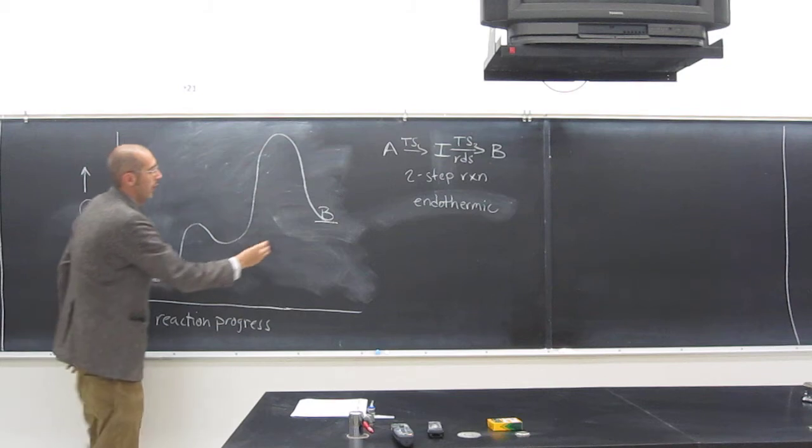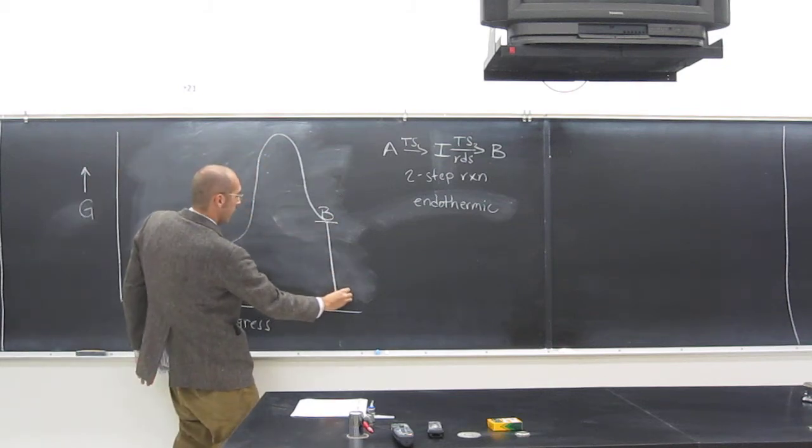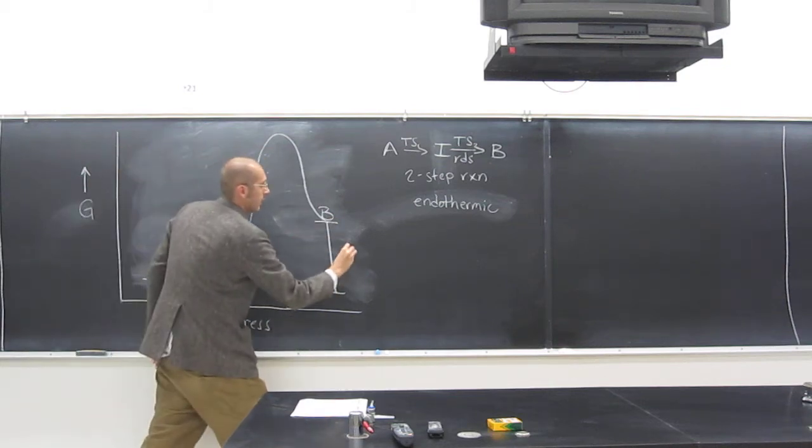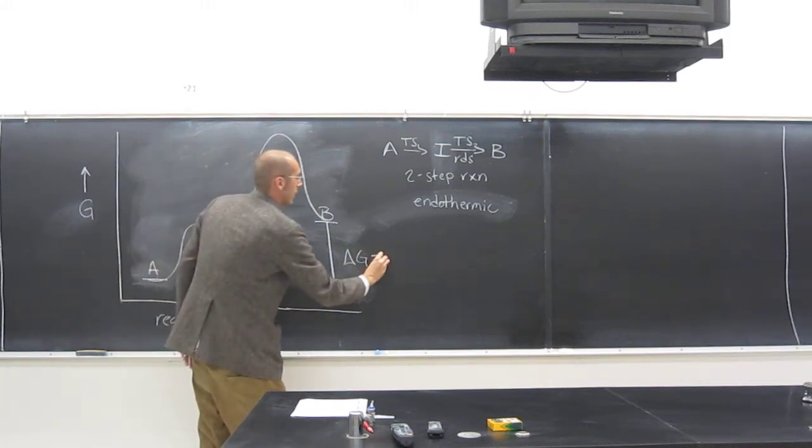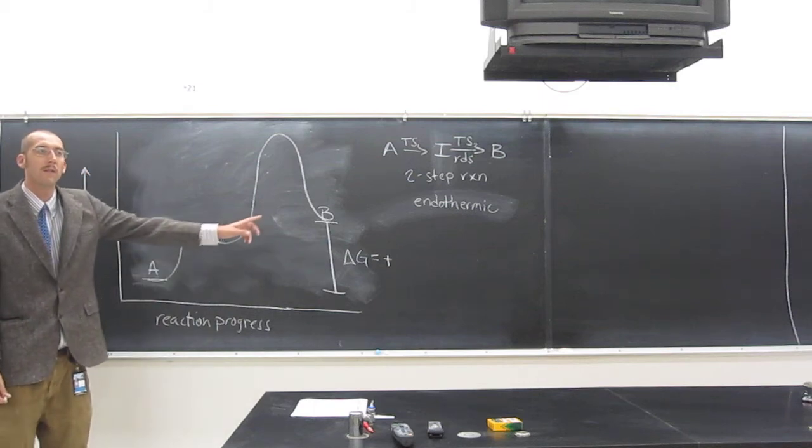So from here to here, it's called the what? Delta G. And is this going to be positive or negative? Positive. Why? Because A is lower than B, right?